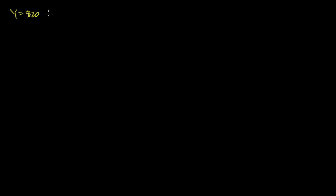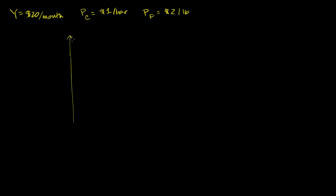Let's review what we've seen with budget lines. Let's say I'm making $20 a month, so my income is $20 per month. The price of chocolate is $1 per bar, and the price of fruit is $2 per pound. We've already done this before, but I'll just redraw a budget line. This axis is the quantity of chocolate, and that is the quantity of fruit.